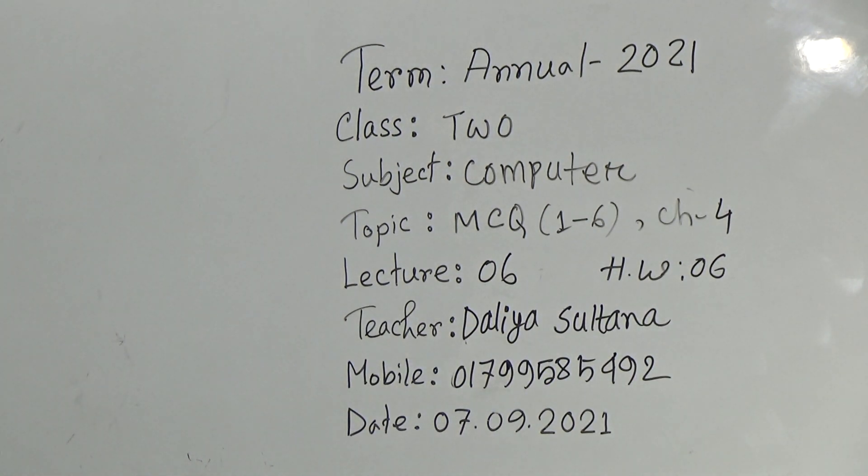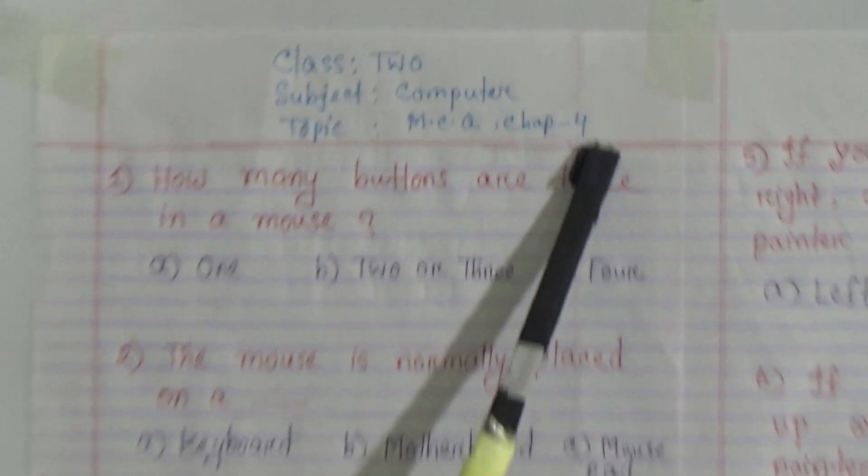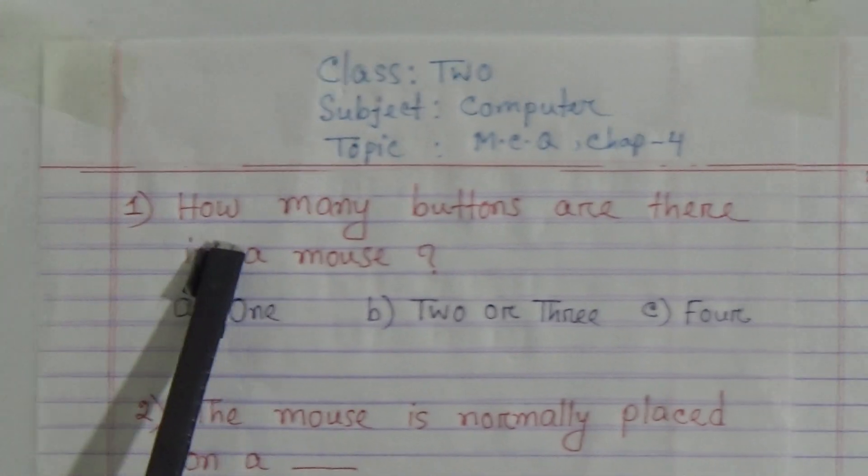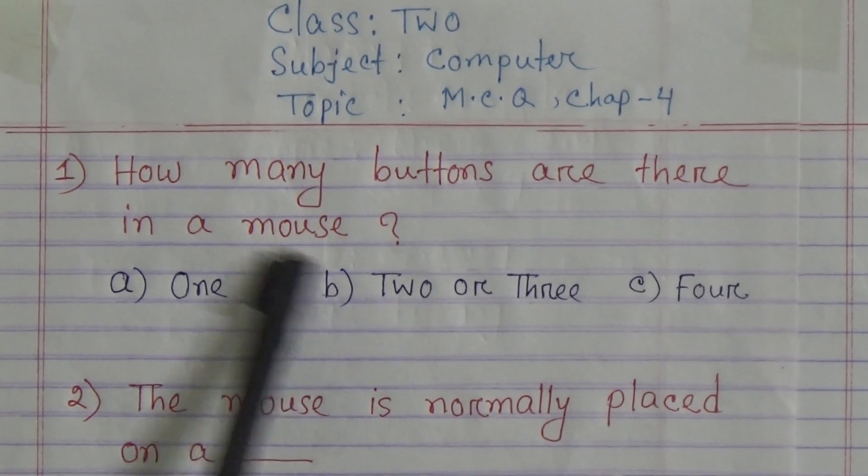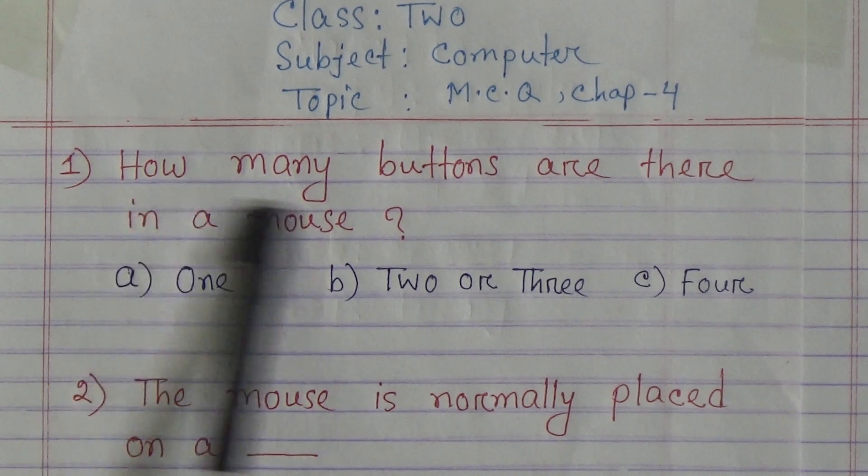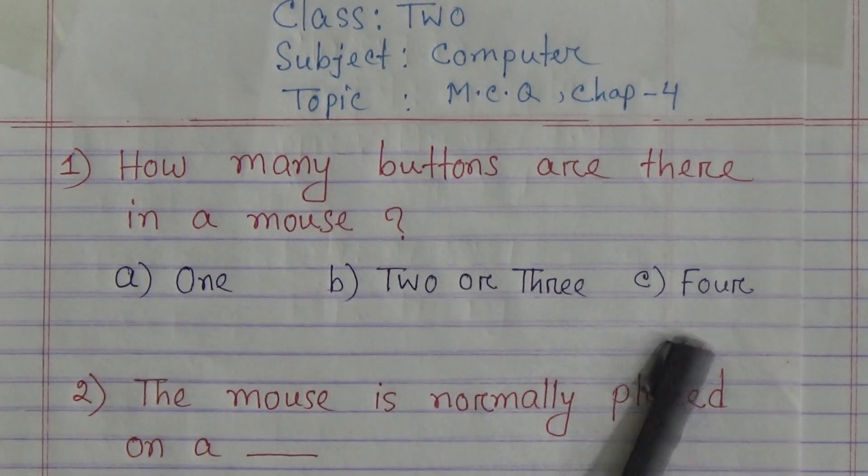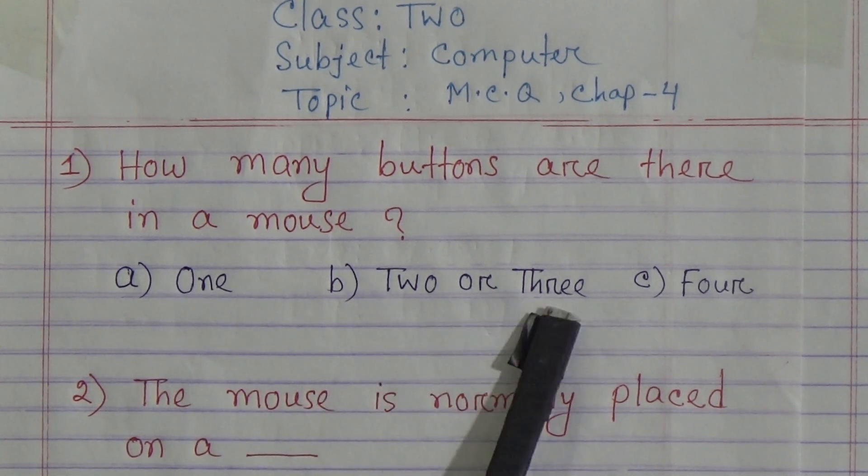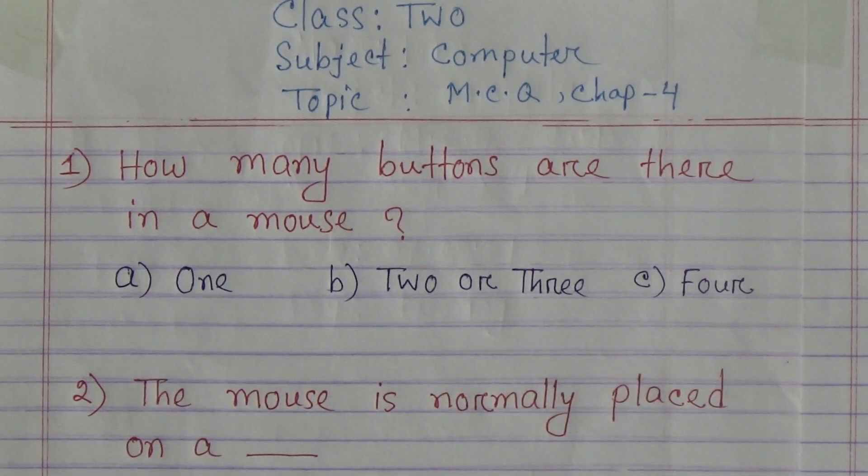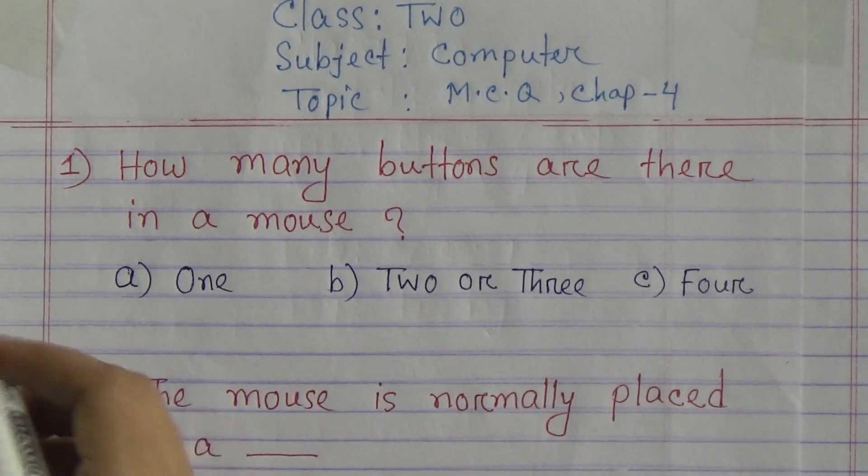Look at the board students. Our topic is MCQ from Chapter 4. Question 1: How many buttons are there in a mouse? Option A: One, Option B: Two or Three, Option C: Four. Which one is correct? You know that Option B is correct.